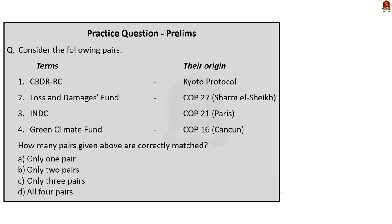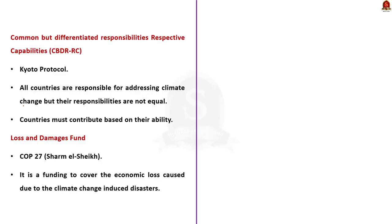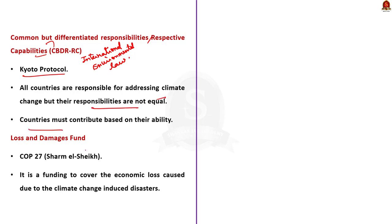The next question is a pair-based question about climate change mitigation terms and their origins. All four pairs given here are correctly matched, so the correct answer is Option D, all four pairs. Let us see points about these terms. CBDRRC stands for Common But Differentiated Responsibilities and Respective Capabilities — it is the principle of international environmental law set out in the Kyoto Protocol. It means all states are responsible for addressing global environmental destruction but not equally responsible, as these differences are linked to countries' contributions and abilities to address greenhouse gas emissions.